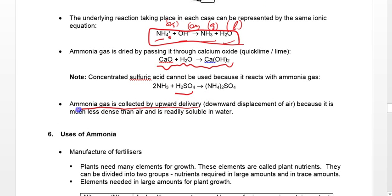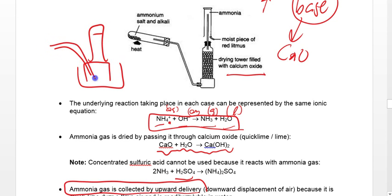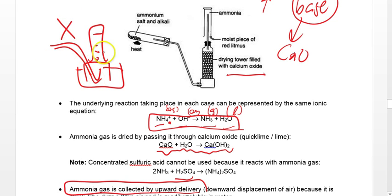The overall ionic equation is: NH4⁺(aq) + OH⁻(aq) → NH3(g) + H2O(l). Please take note of state symbols. Ammonia has a lower density than air, so it can be collected by upward delivery. We never collect ammonia over water by bubbling it through — ammonia is highly soluble in water, so you would not get any gas collected at all.